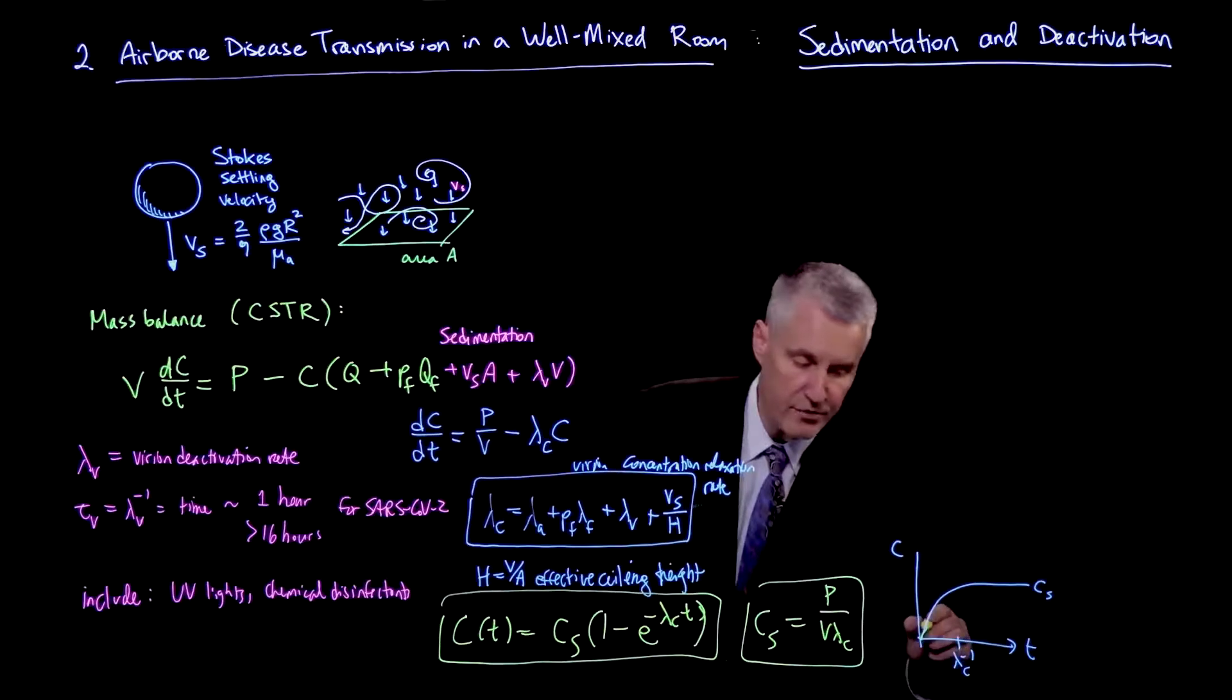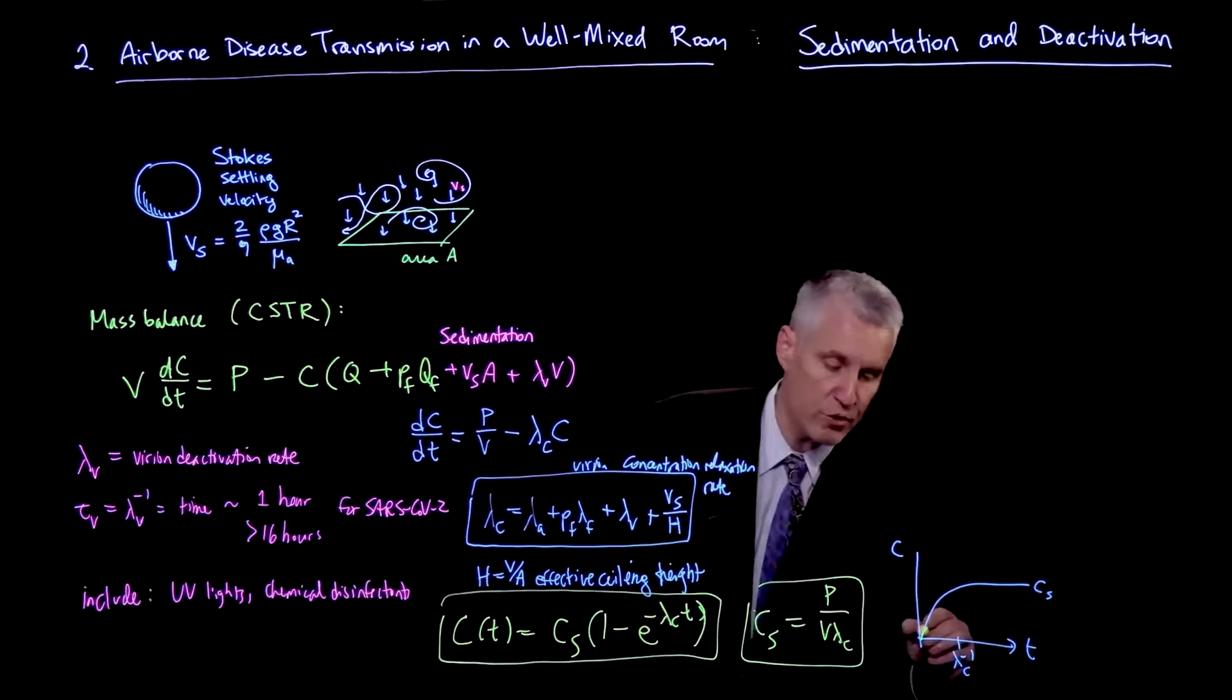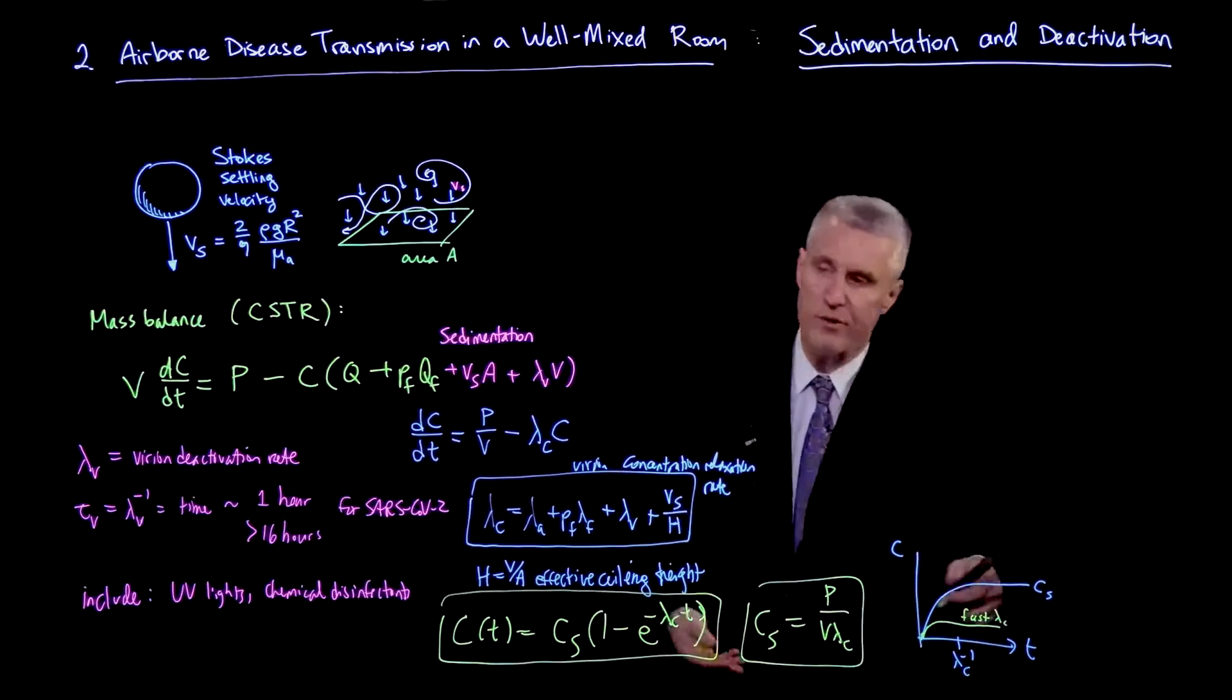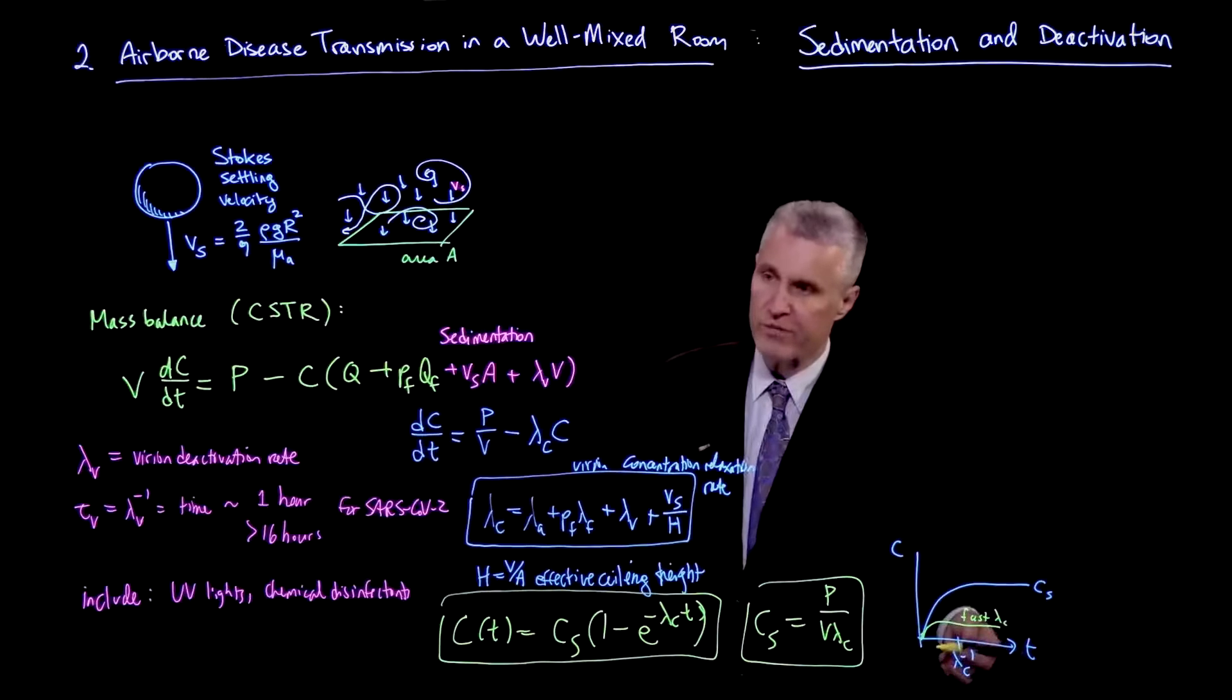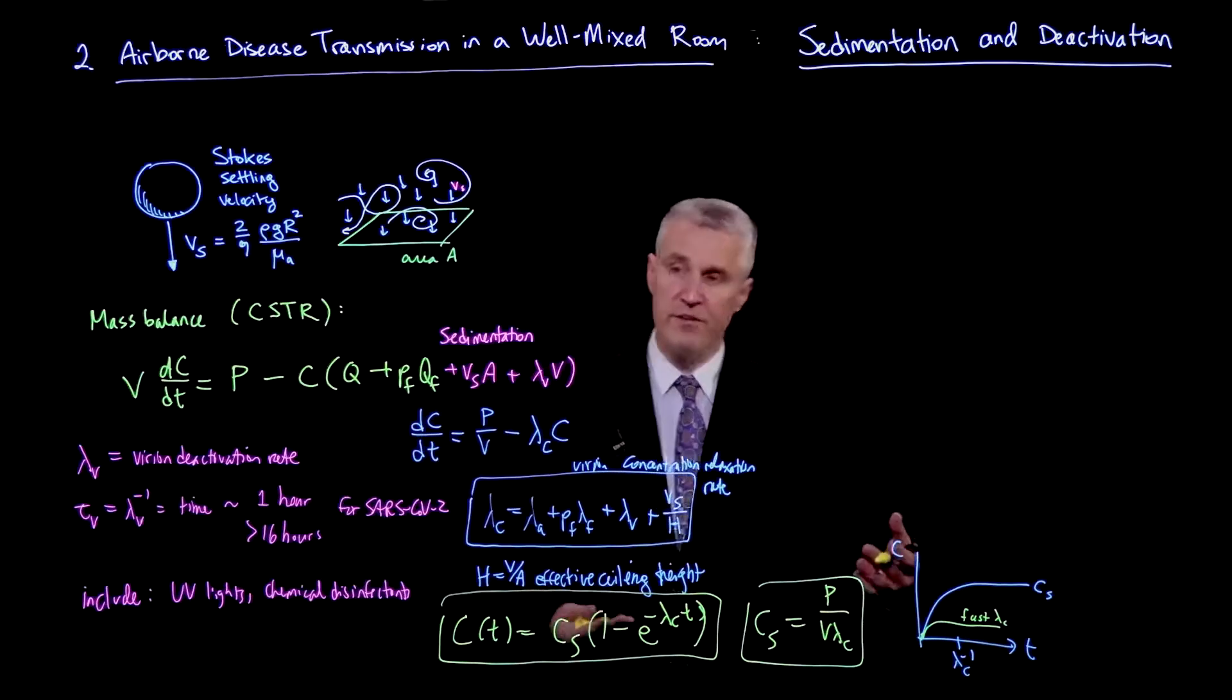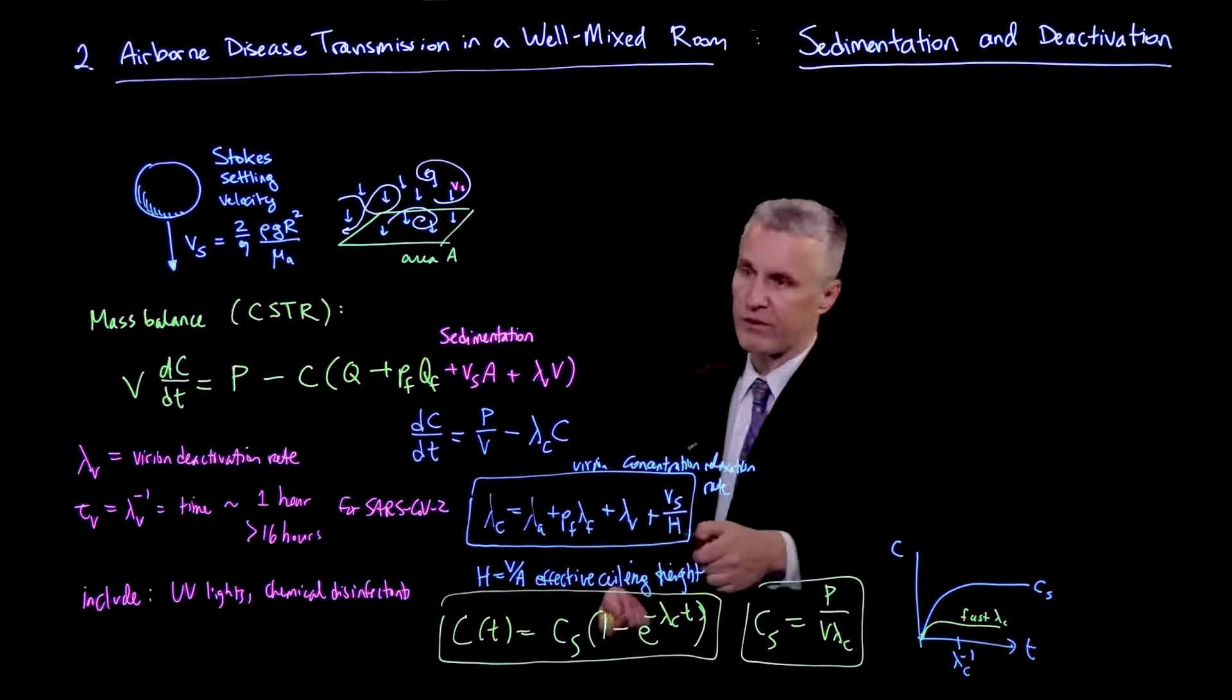But I just want to emphasize what I just said verbally looking at these equations is that as I vary lambda_C, so if I have a fast relaxation, let's say lambda_C is a large value, then I start out at the same rate, but I saturate a lot faster and at a lower value. So if I increase lambda_C relative to the blue curve, the whole thing comes down, but also relaxes more quickly.